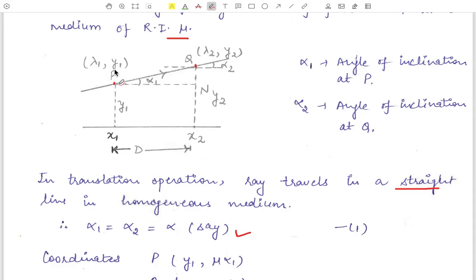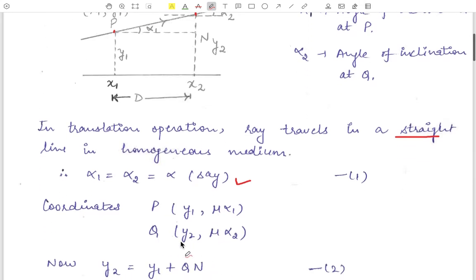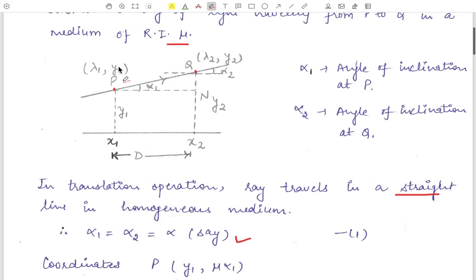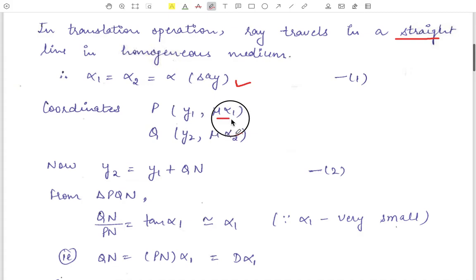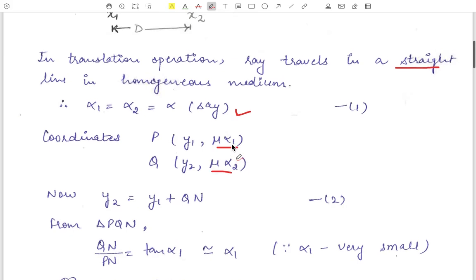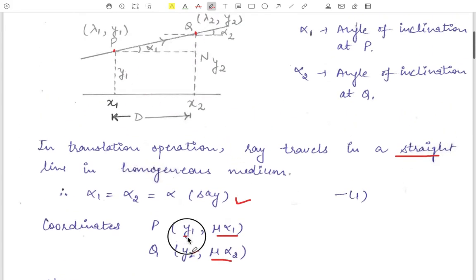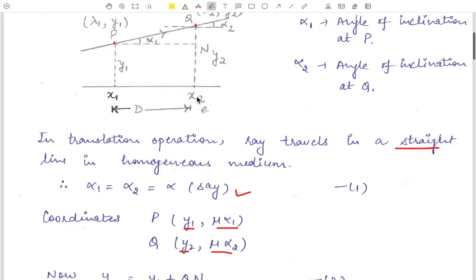The coordinates of point P are (y1, mu*alpha_1) and the coordinates of point Q are (y2, mu*alpha_2). We write these as (y1, lambda_1) and (y2, lambda_2), where lambda_1 = mu*alpha_1 and lambda_2 = mu*alpha_2. Here y1 and y2 are the perpendicular distances of points P and Q respectively from the axis of the system.